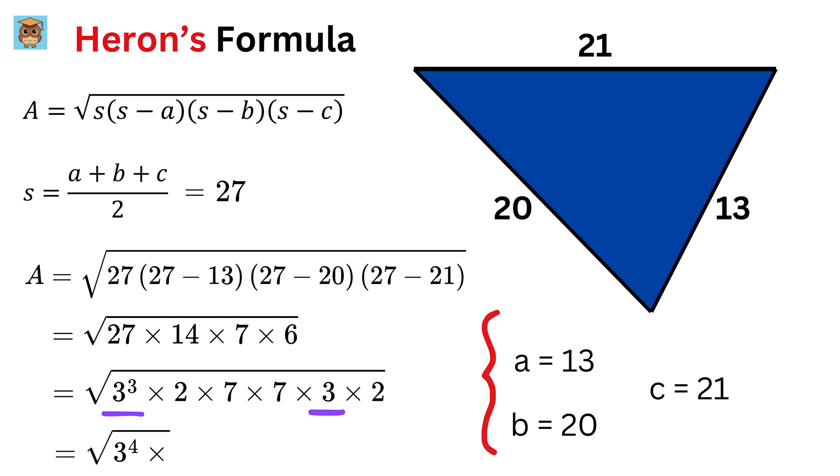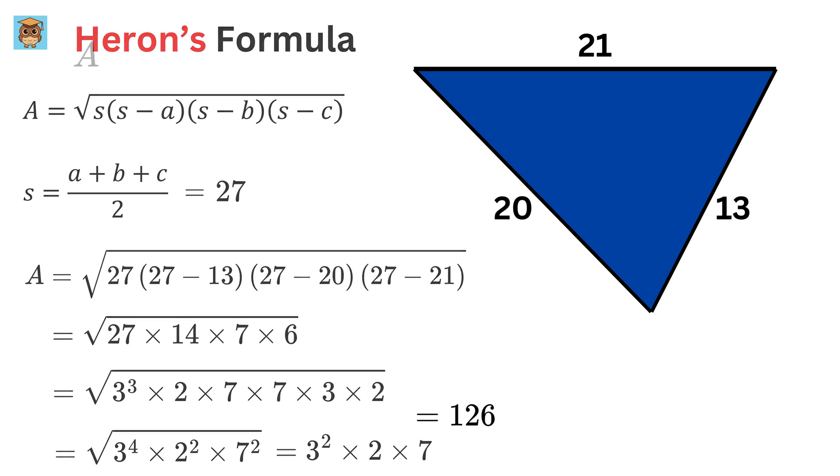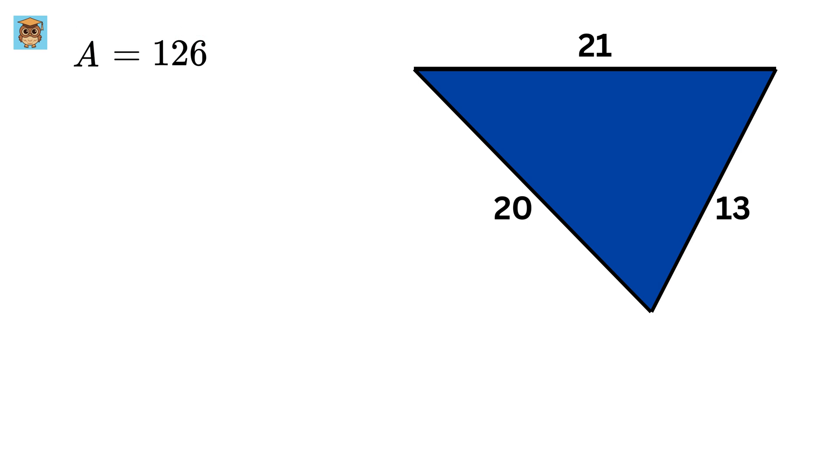Now, 27 equals 3 cubed, 14 equals 2 times 7, and this 6 can also be rewritten as 3 times 2. So, we have this as 3 raised to the fourth power times 2 squared times 7 squared. So, after removing this square root, we are left with 3 squared times 2 times 7, or 126 square units. That is simply amazing!